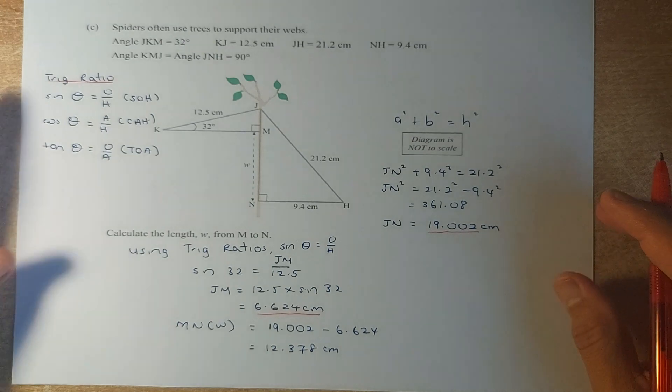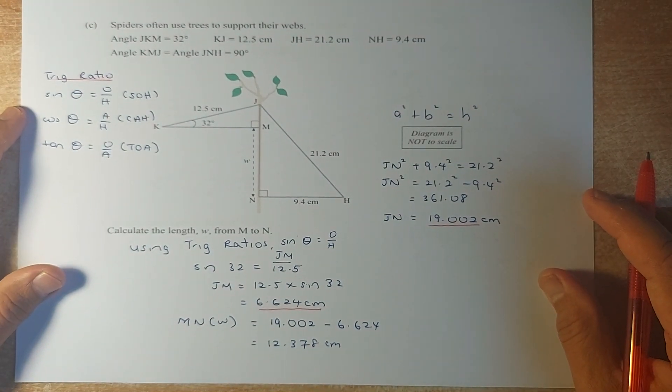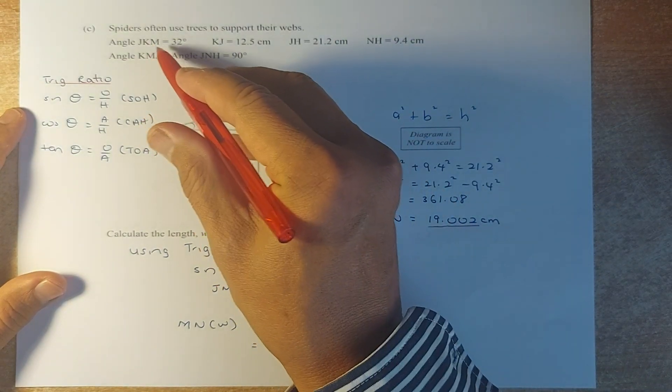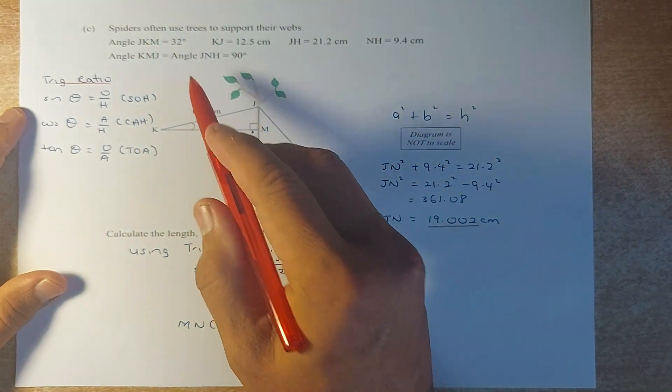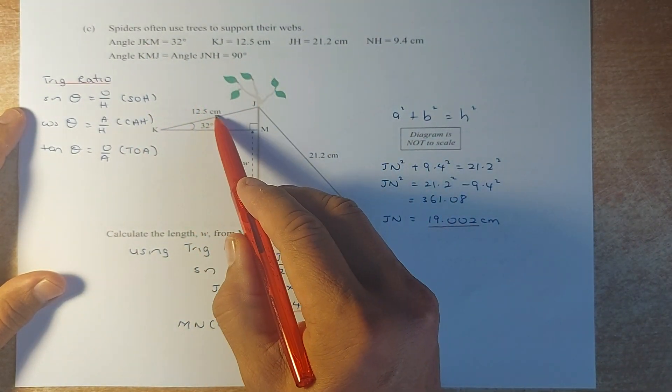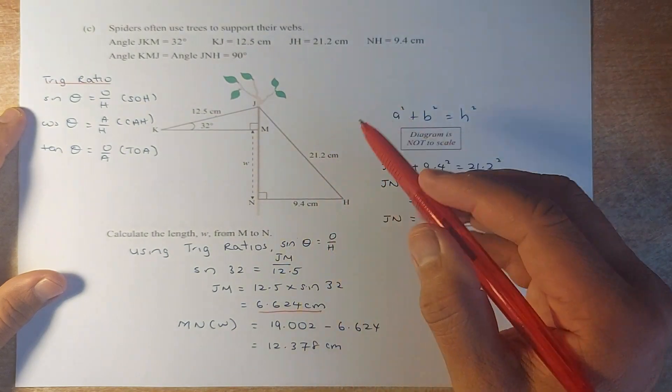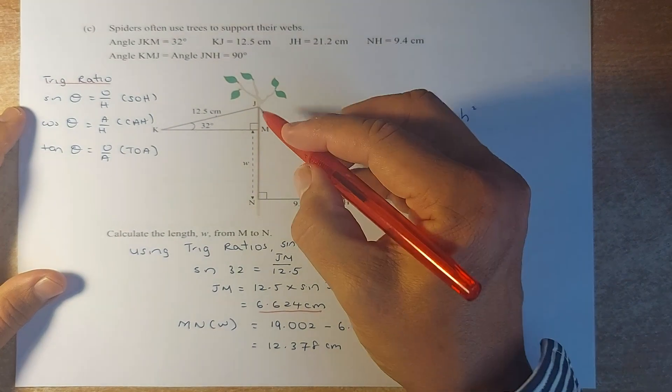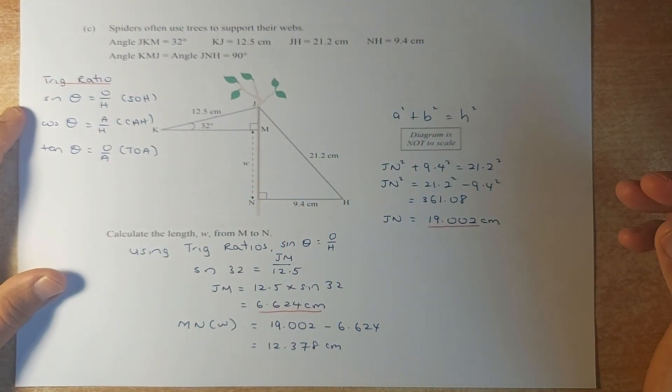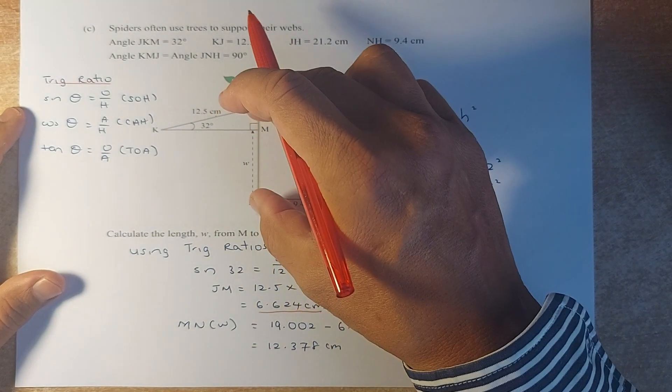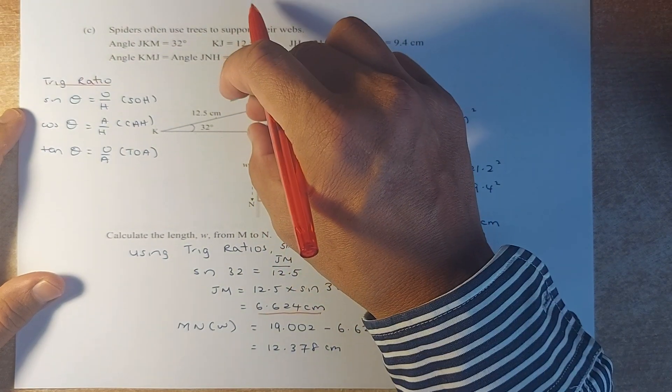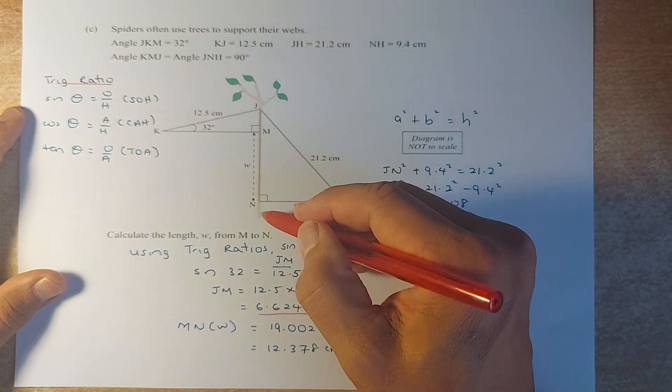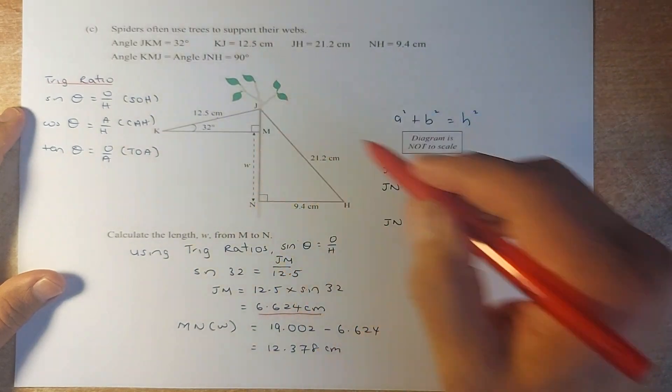Now another merit question. Spiders use trees to support their web. So given this is 32 degrees, angle JKM is 32. The length KJ is 12.5, JH is 21.2, NH is 9.4. You want to calculate W, the length W. To calculate W, you must take this length minus this length. You can get W. So to calculate JN, we have to use this right-angle triangle.